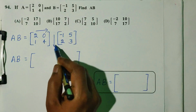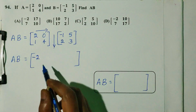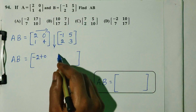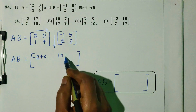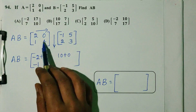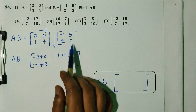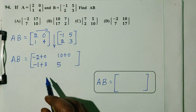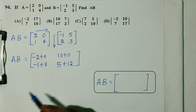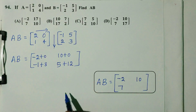For A×B, rows into column: first row first column: 2×(-1) = -2, 0×2 = 0, total = -2. First row second column: 2×5 = 10, 0×3 = 0, total = 10. Second row first column: 1×(-1) = -1, 4×2 = 8, total = 7. Second row second column: 1×5 = 5, 4×3 = 12, total = 17.